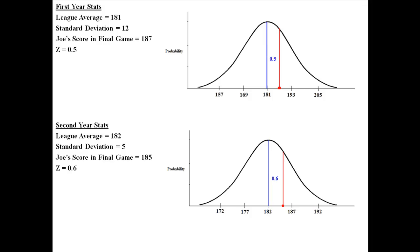The 185 was actually higher than the 187. The 187 was only 0.5 standard deviations above the mean, whereas the 185 was 0.6 standard deviations above the mean. So in this case, the 185 was actually better than the 187 when comparing all the other scores within that year.